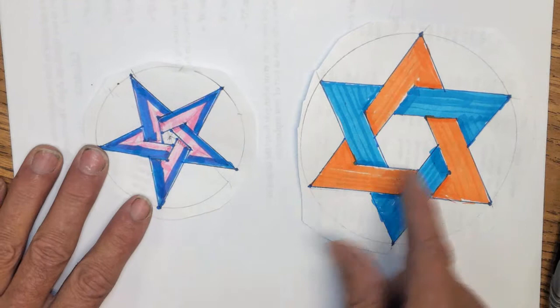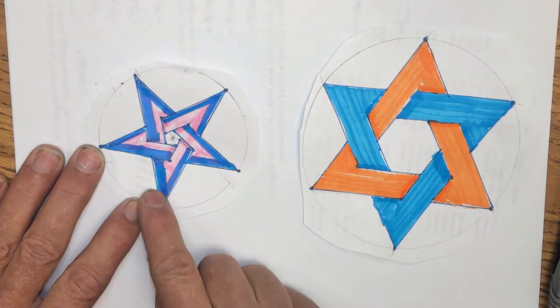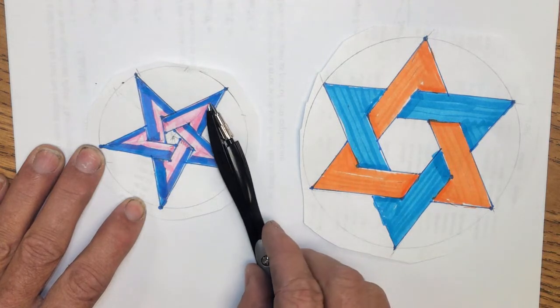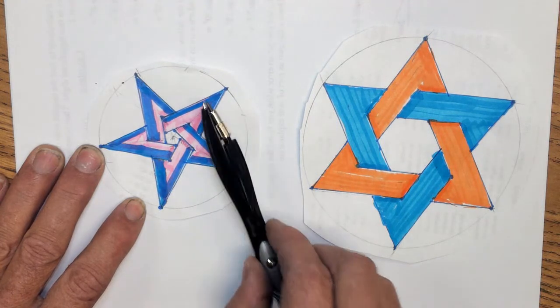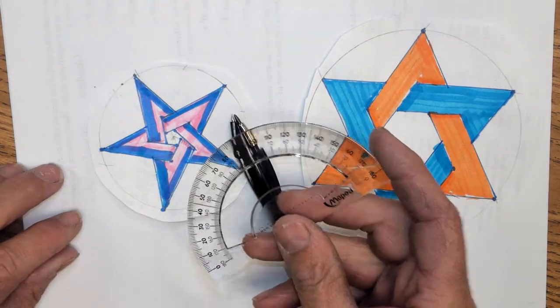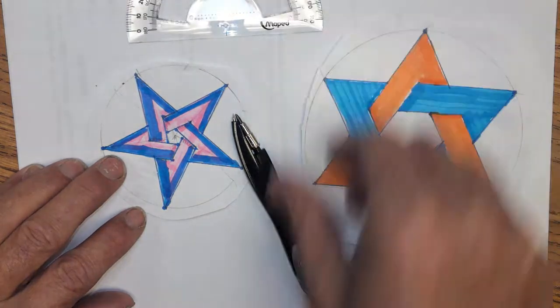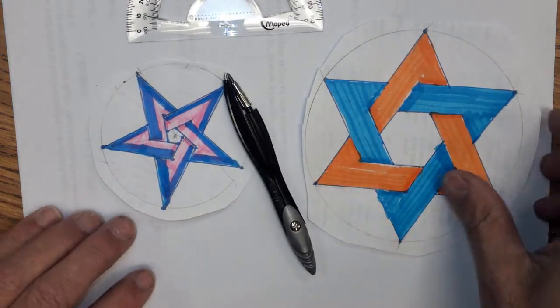But today, we're just going to extend that and do another geometry challenge. We're going to do one with five points. Now, there are ways to do this with just a compass and no measurements, but we're not going to be ready for that right now. So we're going to use a protractor to get our points evenly spaced around the circle. You'll need one of those, and you'll need your compass also.